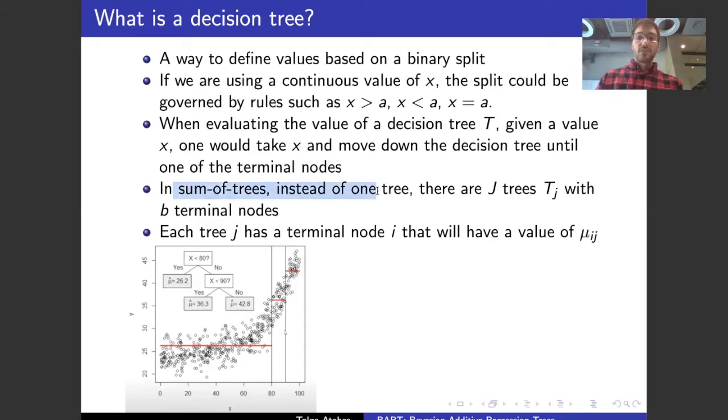In the sum-of-trees model, instead of having one tree, we have multiple trees, and then we're going to have m different trees, t sub j, with each tree having B terminal nodes, and each node is then going to be labeled mu ij, being it's the ith node of tree j. So in this case, mu is 26.2, and that's going to be the mean of all the values here in the observed data that are less than 80. In different cases, it's going to be different values, but it's the mean here.